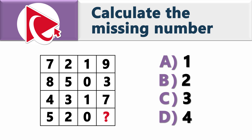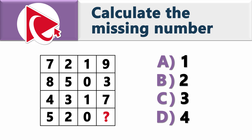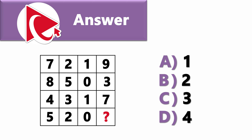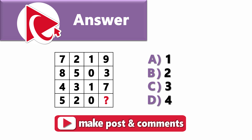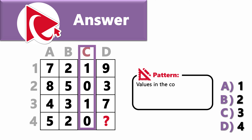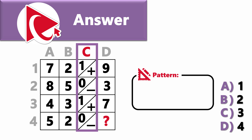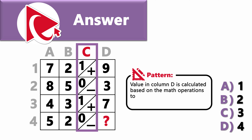Examine this problem closely to see if you can get to the correct solution. The trick is to detect the pattern. Let's break down the 4×4 matrix into columns and rows, numbering rows 1, 2, 3, 4 and columns A, B, C, D. What's unusual is that values in column C define the sign for the math operation: the value 1 is equivalent to addition, and value 0 is equivalent to subtraction. Once you know this rule, you can calculate the value in column D based on operations applied to columns A and B.